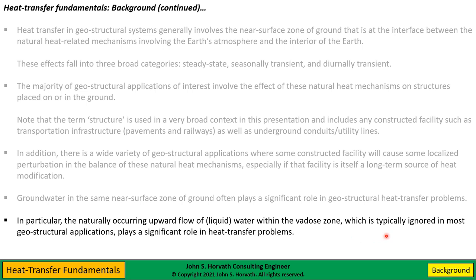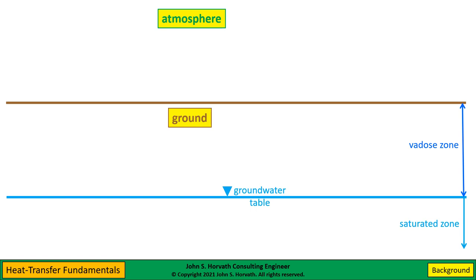The most important thing about the groundwater system is the naturally occurring upward flow of water within the vadose zone. This is typically ignored in most geostructural applications, but it plays a very significant role in heat transfer problems, as we'll see later on. So we need to cover this in some detail.